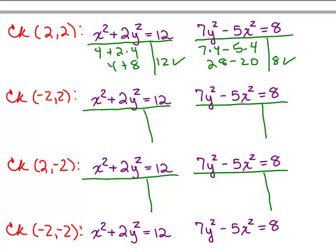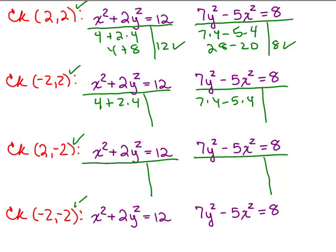So on the second one, when we put in negative 2, the cool thing is negative 2 when you square it, you get the same thing as when you square positive 2. So when you do all of these, they end up looking really similar. We're going to get 4 plus 2 times 4 again. We're going to get 7 times 4 minus 5 times 4 again. So all of these are going to check. I'm not going to take my time writing all those, but you could certainly plug in the values and check for yourself that these really are the 4 solutions to this problem.